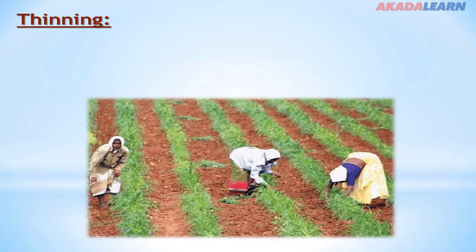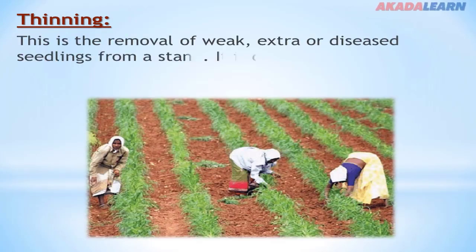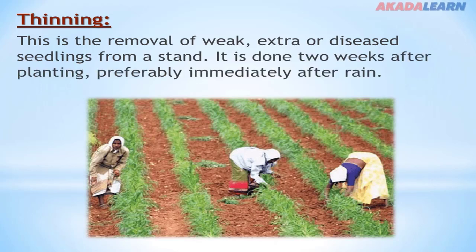Thinning. What is thinning? Thinning is the removal of weak, extra, or diseased seedlings from a stand. It is done 2 weeks after planting, preferably immediately after rainfall. This is carried out to prevent unnecessary competition of nutrients.